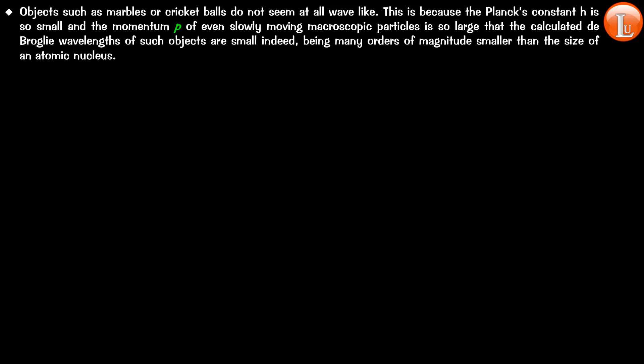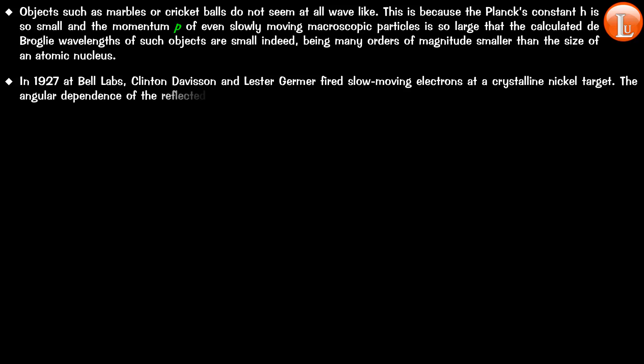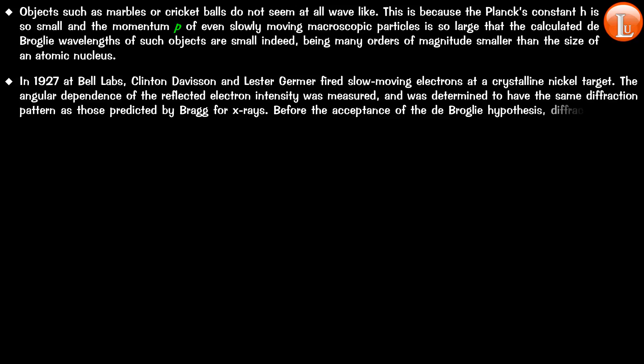And finally, in 1927, at Bell Labs, Davison and Germer fired slow-moving electrons at a crystalline nickel target. And they were able to find out the angular dependence of the reflected electron intensity, and they were able to find out that it is very similar in pattern to the one that is predicted by Bragg's law for X-rays.